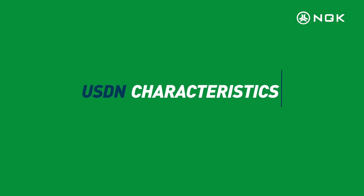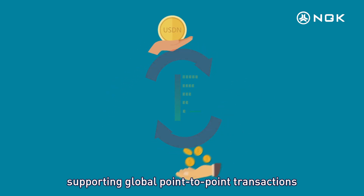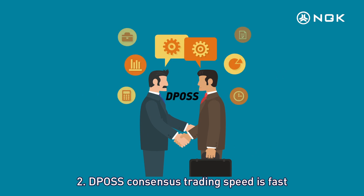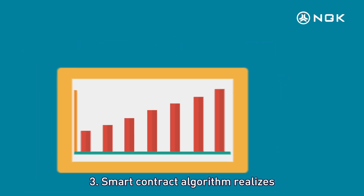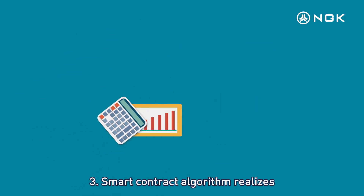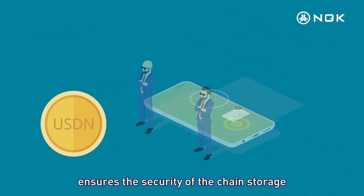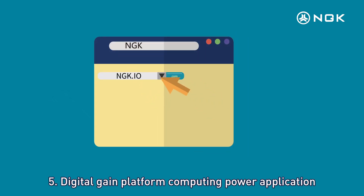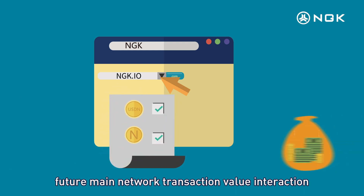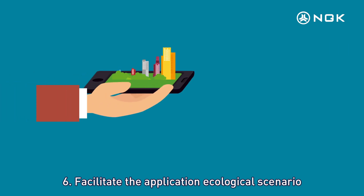USDN characteristics: one, extremely low transaction costs supporting global point-to-point and cross-border transactions; two, PBFT consensus trading speed is fast — USDN can achieve 5,000+ transactions per second; three, smart contract algorithms realize an immutable balance mechanism; four, the decentralized digital currency model ensures the security of on-chain storage.